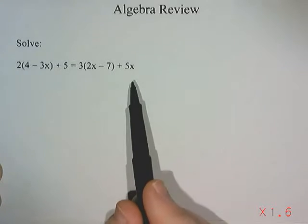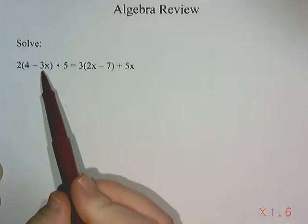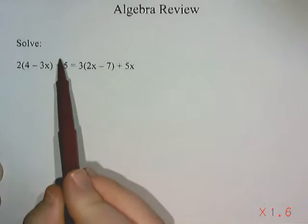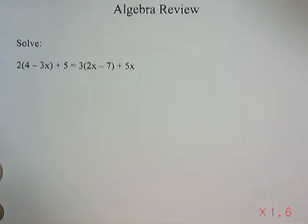This is an equation to solve. When it asks us to solve, what it wants us to do is find a value that we could put in for every single x in this equation that would make the left side of the equation come out to be the same number as the right side of the equation.